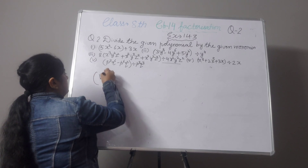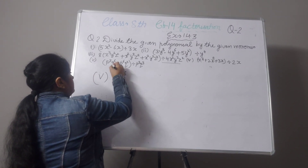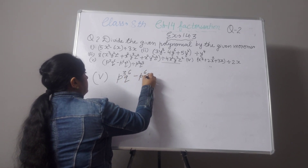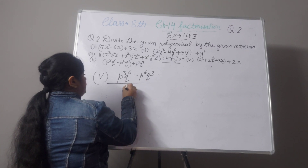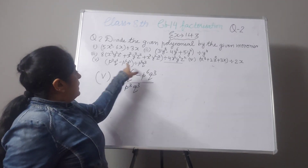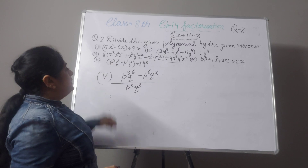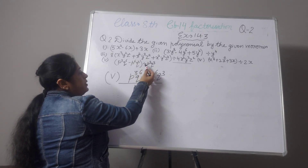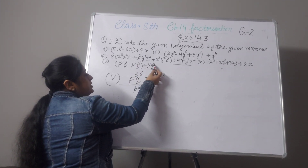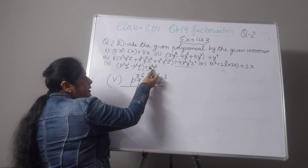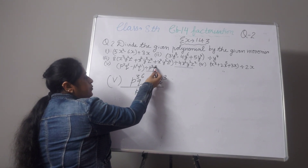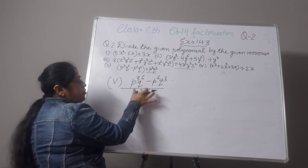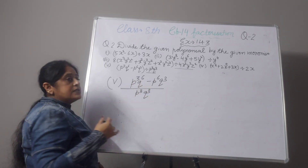Now the 5th part: p³q⁶ minus p⁶q³, divided by p³q³. I will write p³q³ as the denominator. Directly you cannot cut — the numerator is a binomial (two terms) and the denominator is a monomial. The first step is to take common.